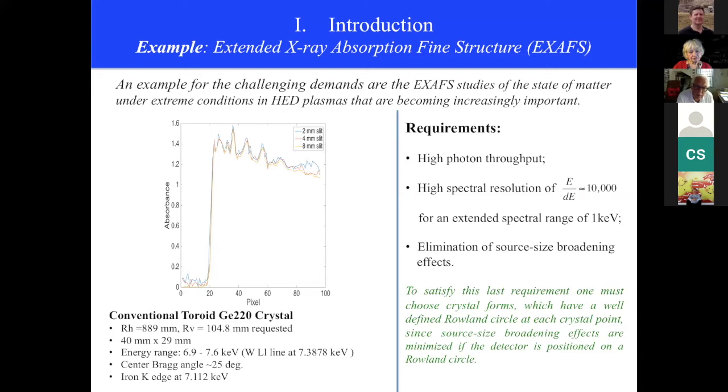So what are the requirements to measure such a spectrum in great detail? You need extremely high spectral resolution of about 10 kiloelectronvolts for an extended spectral range of one kiloelectronvolt, and you need very high photon throughput to reduce statistical errors.